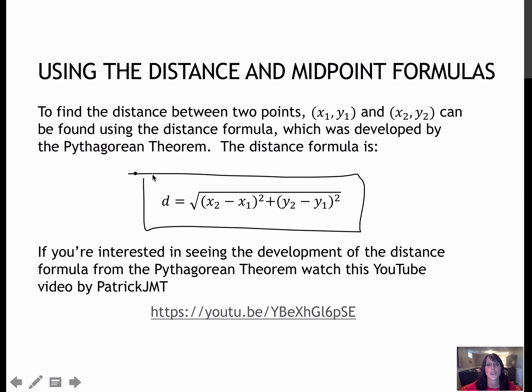In essence, we're finding the difference of the x values and squaring it, and the difference of the y values and squaring it, and then adding those values together to take the square root.